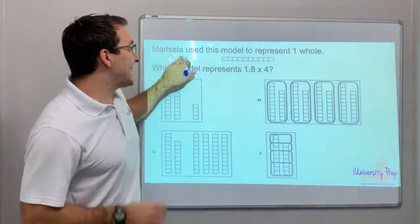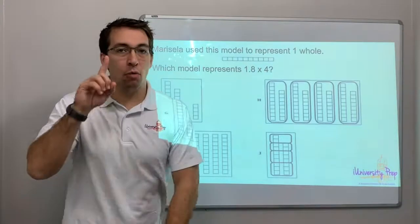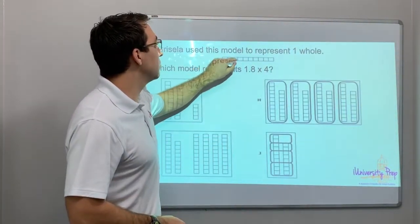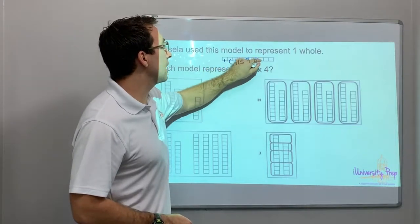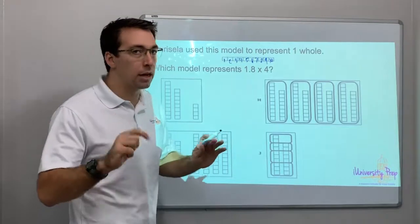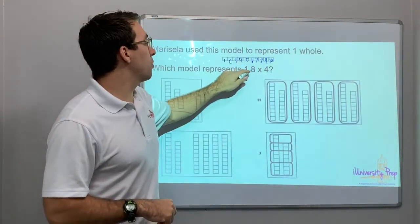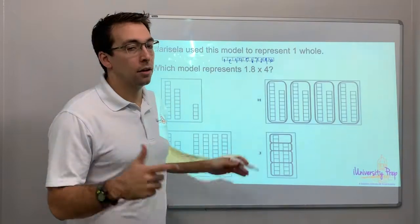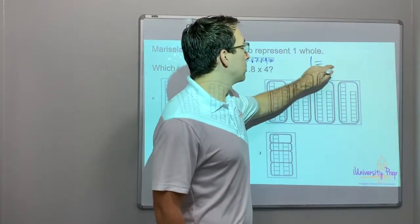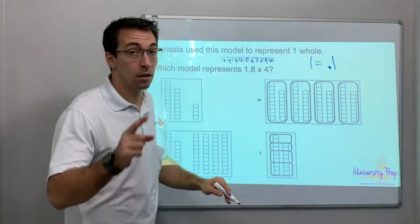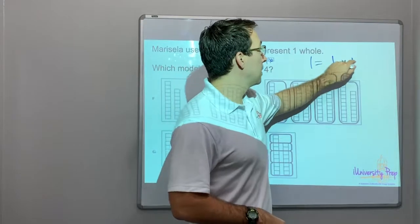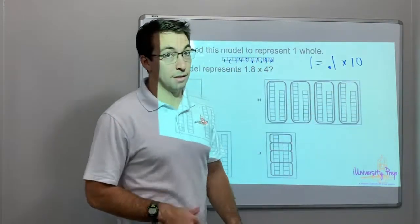Maricela uses this model to represent one whole. This is ten — ten equals one in this question. One, two, three, four, five, six, seven, eight, nine, ten — ten equals one. Which model represents 1.8? One equals one-tenth, right — the tenth place. Times ten.